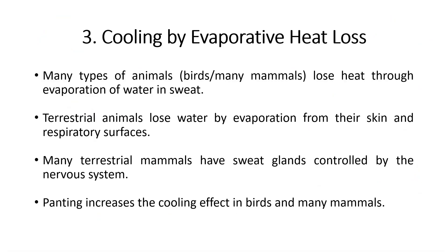Number three — cooling by evaporative heat loss: many animals, including birds and mammals, lose heat through evaporation of water in sweat. Terrestrial animals lose water by evaporation from their skin and respiratory surfaces. Many terrestrial animals have sweat glands controlled by the nervous system, and panting increases the cooling effect in birds and many mammals.